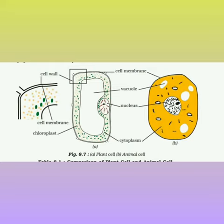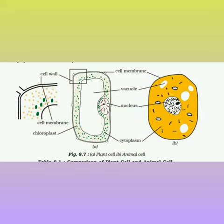On comparing the two cells together, we find that cell membrane or the plasma membrane is present in both types of cells. But cell wall is only present in case of plant cells — it is absent in animal cells. Plastids are present in plant cells, while in animal cells the plastids are absent.